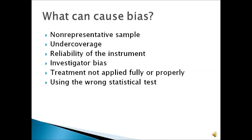Now, when we've conducted experiments or observational studies, bias can be a really big problem. What are the things that can cause bias? First of all, if the sample is non-representative — if the sample does not represent your population, that can cause bias. Convenient samples are especially prone to this non-representative sample bias, but other types of samples can be as well.